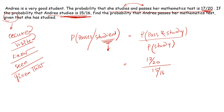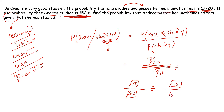Students often make mistakes entering this in the calculator. Write 17/20, then put the divide sign, then write 15/16. So 17/20 divided by 15/16 gives 68/75 as the final answer — the probability that she passes mathematics given that she already studied.